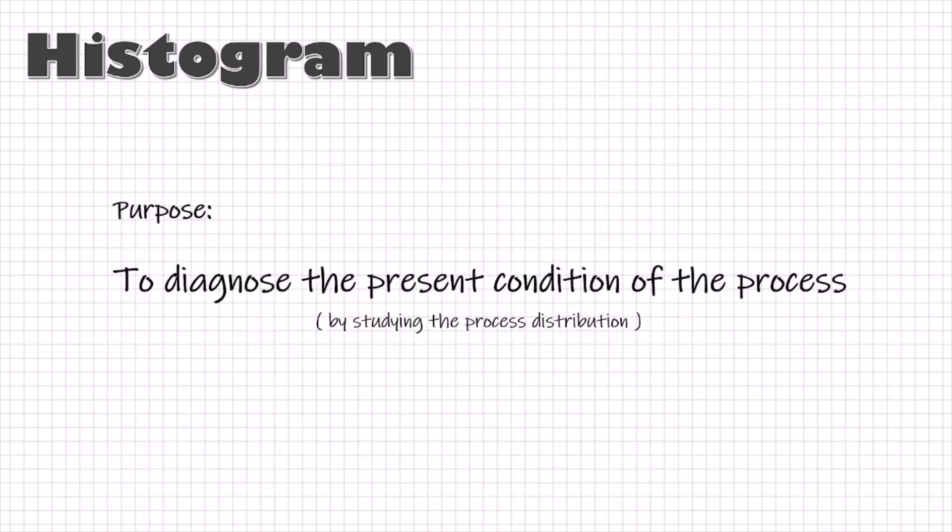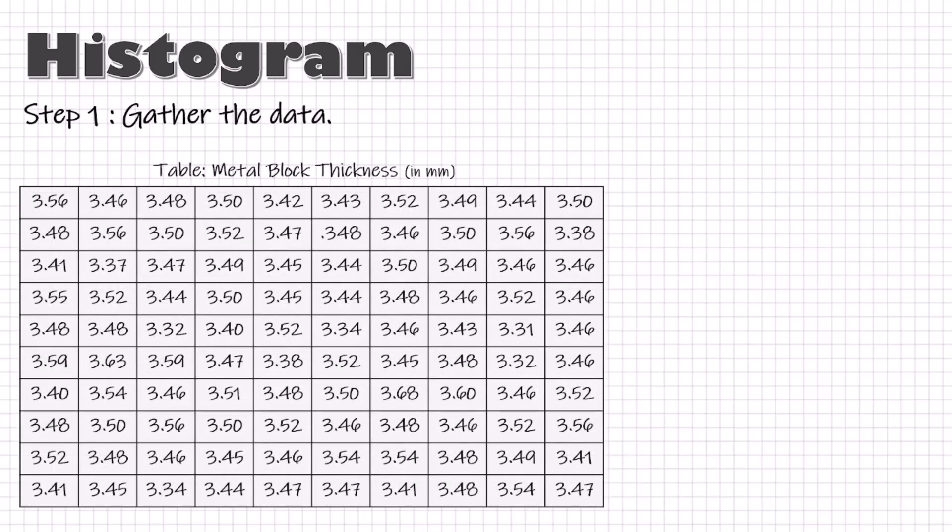So, with histogram, we can diagnose the present condition of our process. Here are the steps to create a histogram. First, gather the data. For demonstration purposes, let us consider this data to represent thickness variation in hundred metal blocks.